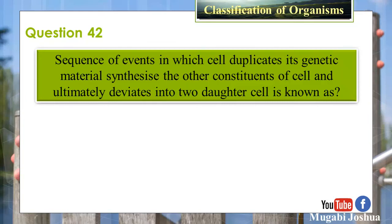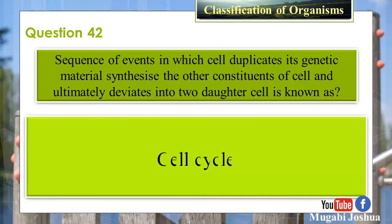Question 42: The sequence of events in which a cell duplicates its genetic material, synthesizes the other constituents of the cell, and ultimately divides into two daughter cells is known as? Answer: The cell cycle.